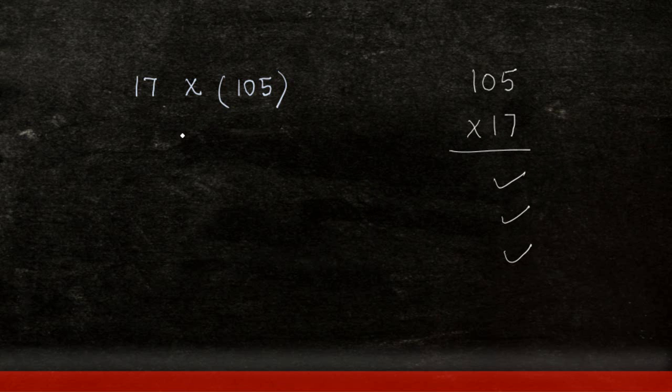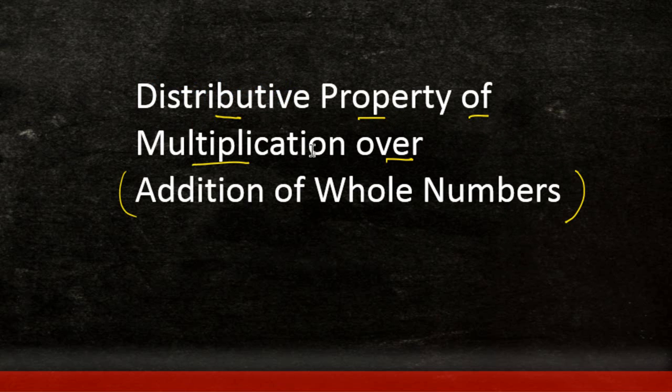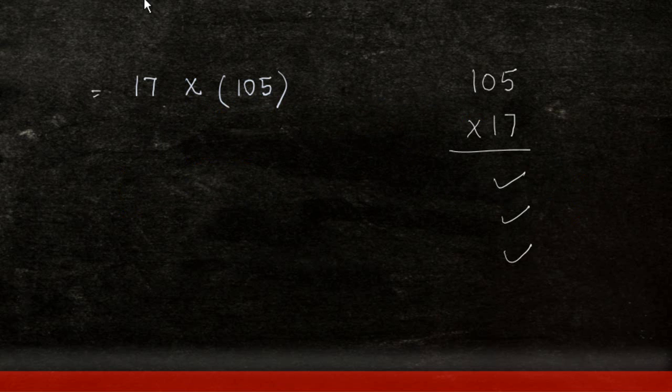But there is another way which we can use and do this simply. And this is where the distributive property of multiplication over addition of whole numbers comes into place. What this property says is that when I have to multiply two numbers, what I can do is, keeping one number the way it is,